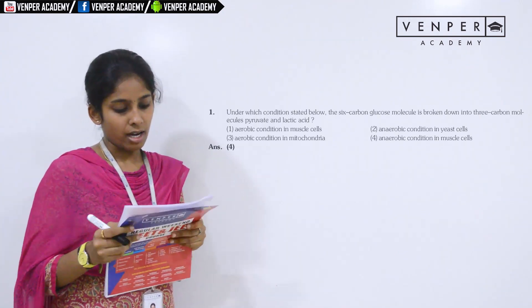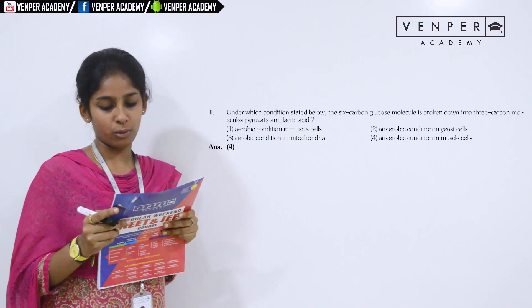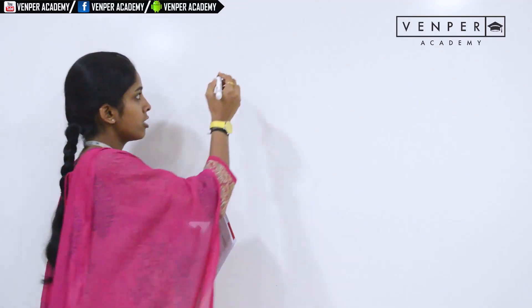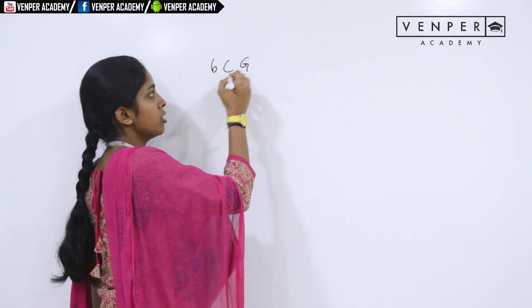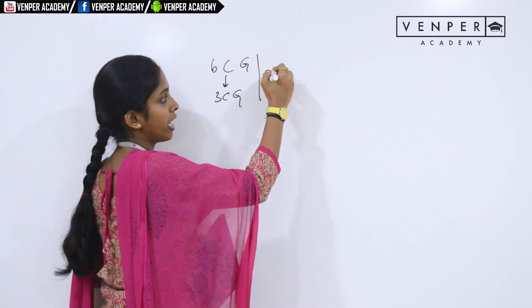Hello, now I am going to discuss NTSD stage 2 SAT paper. The first question: under which condition is a 6-carbon glucose molecule broken down into 3-carbon molecules, pyruvate and lactic acid? This concept of 6-carbon glucose breaking into 3-carbon molecules, the process is called glycolysis.